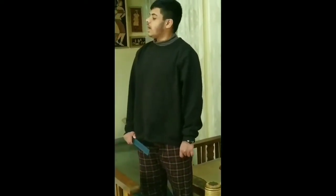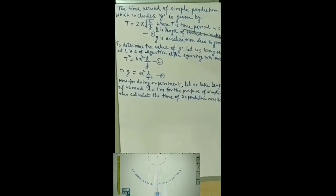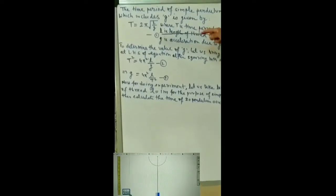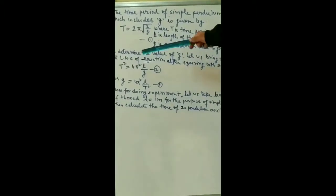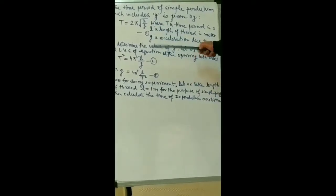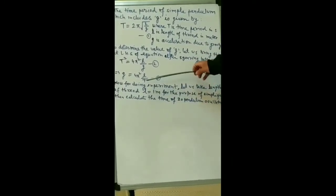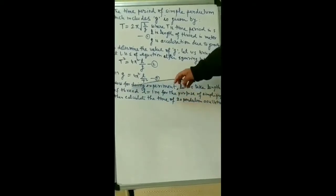Let me set up the experiment to determine the value of small g at our place, that is Shillong. The time period of a simple pendulum, which includes small g, is given by: T = 2π√(L/g) — equation 1. Where T is time period in seconds, L is length of thread in meters, and g is acceleration due to gravity. To determine the value of small g, squaring both sides: T² = 4π²L/g — equation 2. Therefore, small g = 4π²L/T² — equation 3.